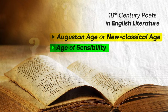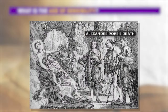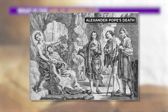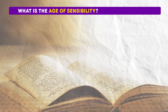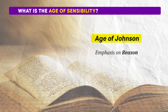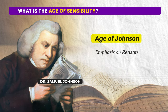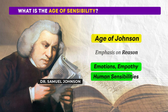What is the Age of Sensibility? The period following Alexander Pope's death and leading up to the first edition of Lyrical Ballads in 1798 is often referred to as the Age of Sensibility or the Age of Johnson. This era earned the title of the Age of Sensibility due to its emphasis on emotion. It is also called the Age of Johnson after Dr. Samuel Johnson because he greatly influenced this period. During this time, writers explored emotions, empathy and human sensibilities, marking a departure from the rationalism of the preceding Augustan Age.